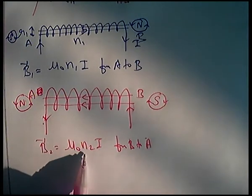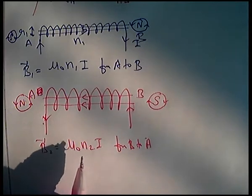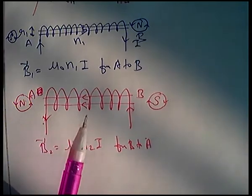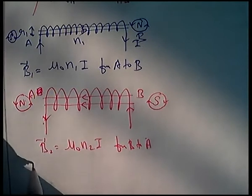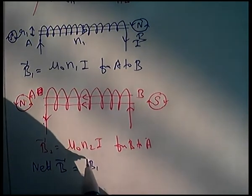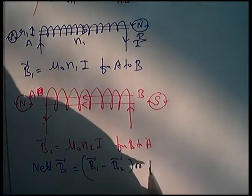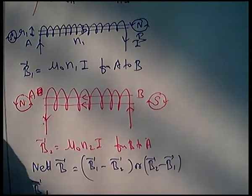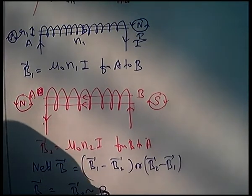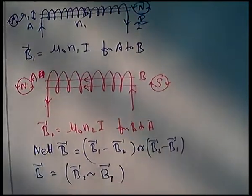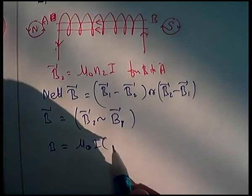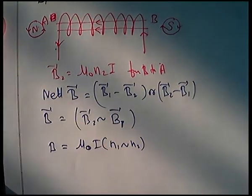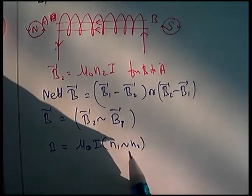The current is the same I. N1 and N2 — we don't know which is bigger or smaller. There are two magnetic fields on the axis, and the two magnetic fields are in opposite directions. So net magnetic field: B_net vector equals B1 vector minus B2 vector. The magnitude is B equals mu naught I times |N1 minus N2|.